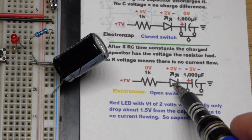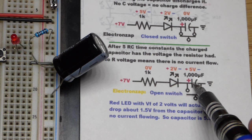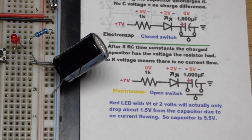The red LED, it's going to be about 1.5 volts. So the capacitor is going to be about 5.5 volts.